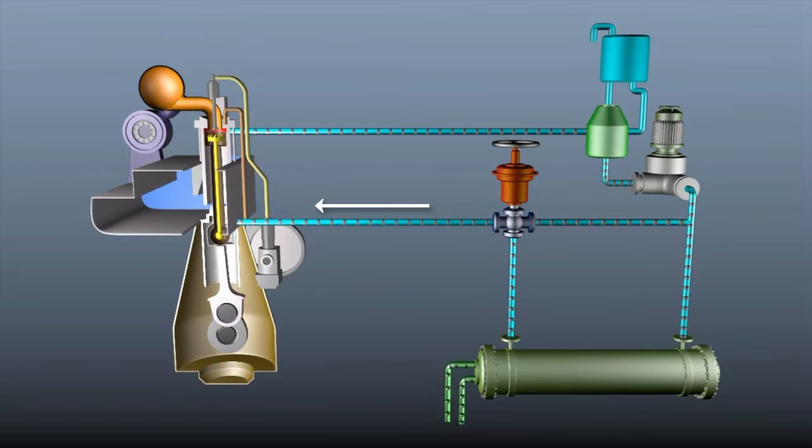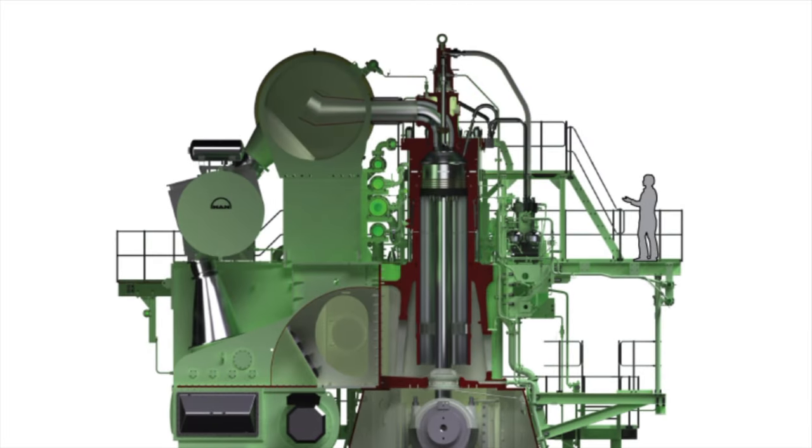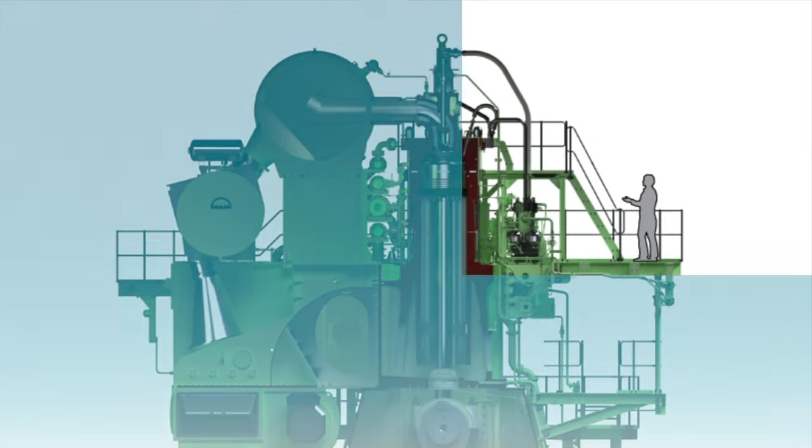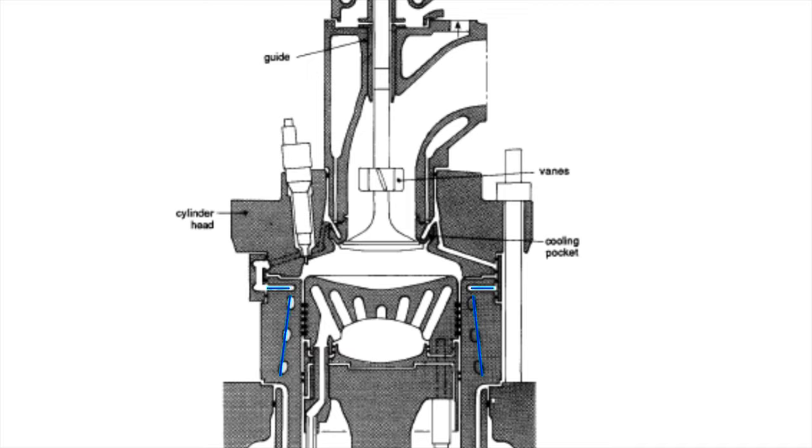The water is then passed into the engine jacket and other components. The water will go into the entablature bores, cooling the liner and then it goes to the cylinder head and finally to the exhaust valve.